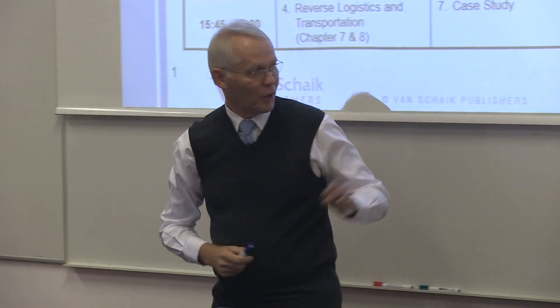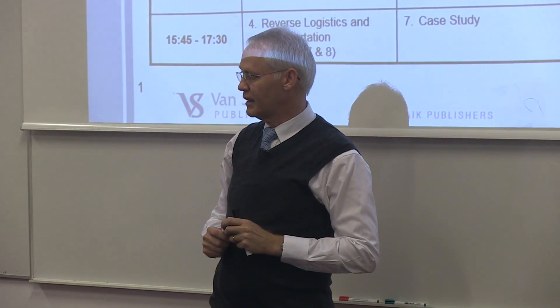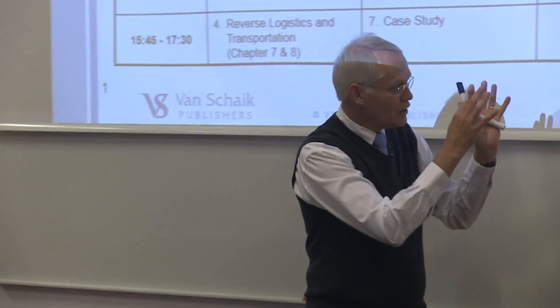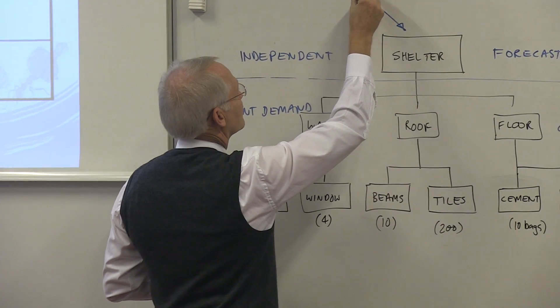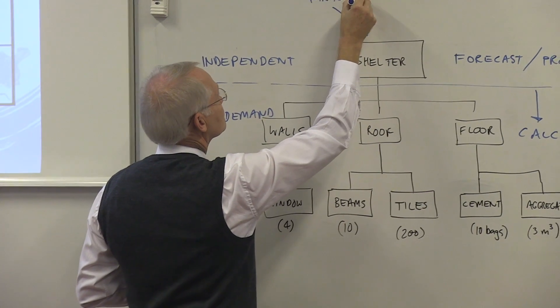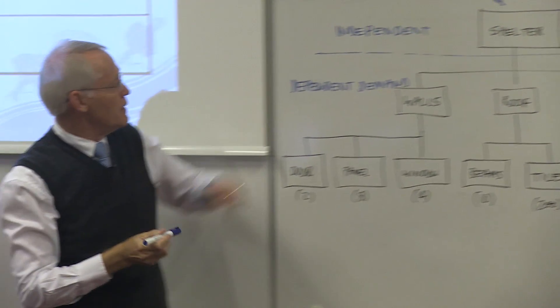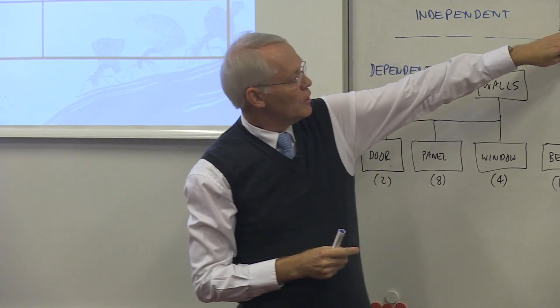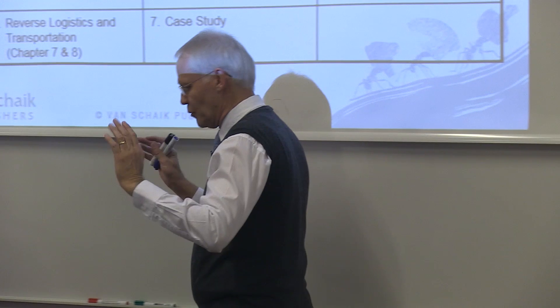Because it depends on the final item. Does it make sense? So in this shelter, this thing is what we call a final product. So for us in the field, we have an independent demand which is forecasted or a program number given to us. The rest we calculate.